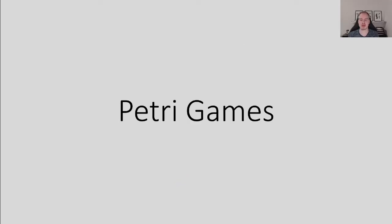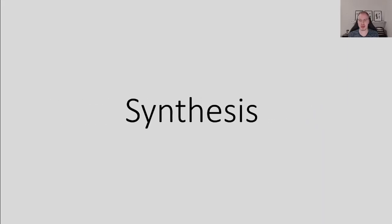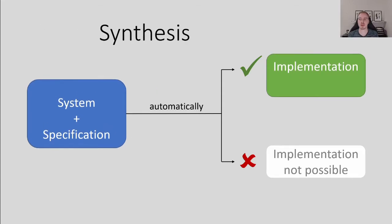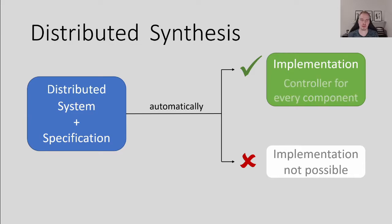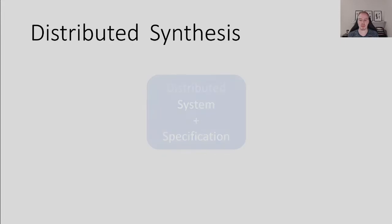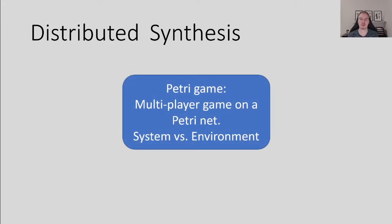Let's start with the question: what are Petri games? Petri games are a model for distributed synthesis. Synthesis describes the abstract concept of automatically generating an implementation of a system such that it satisfies a given specification, or stating that no such implementation exists. In the case of a distributed system, we want a controller for each component and talk about distributed synthesis. We model a distributed system by a Petri net, and for the specification, we play a multiplayer game on this net. The individual tokens are players and the team of system players plays against the team of environment players. Each player can use its knowledge to allow or forbid transitions in its post set.